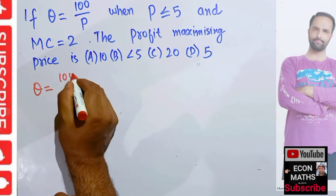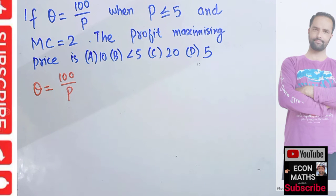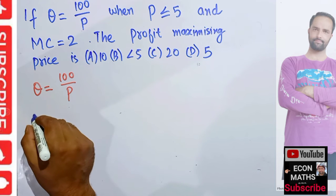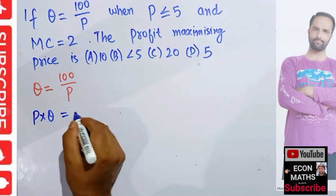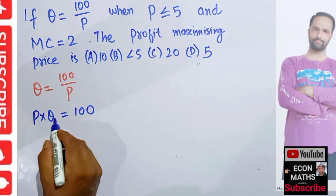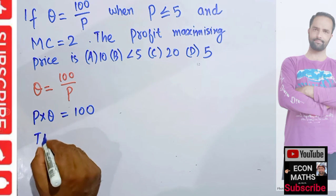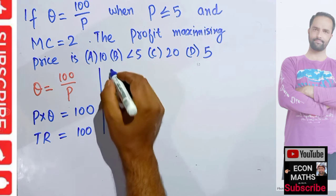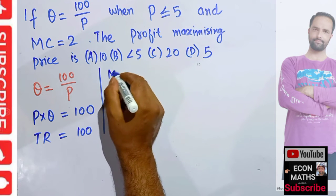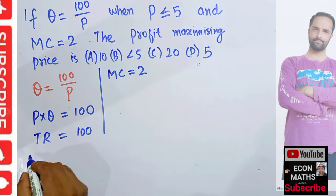We are given the demand function Q equals 100 divided by P. If we multiply P by Q, then P times Q equals 100. We know that P times Q is simply total revenue, which means total revenue is equal to 100. We are also told that marginal cost is equal to 2.